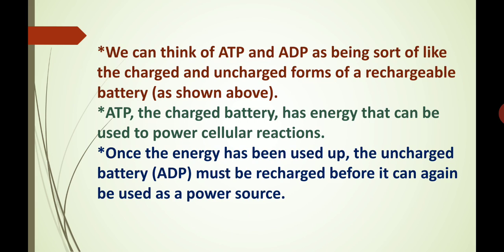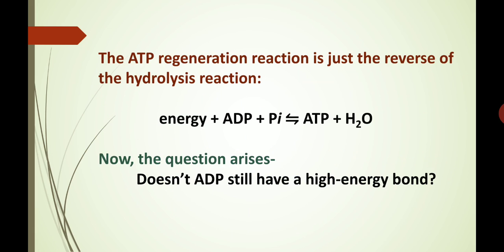Once the energy has been used up, the uncharged battery — that is ADP — must be recharged before it can again be used as a power source for the cell. The ATP regeneration reaction is just the reverse of the hydrolysis reaction: energy plus ADP plus inorganic phosphate gives rise to ATP and water.